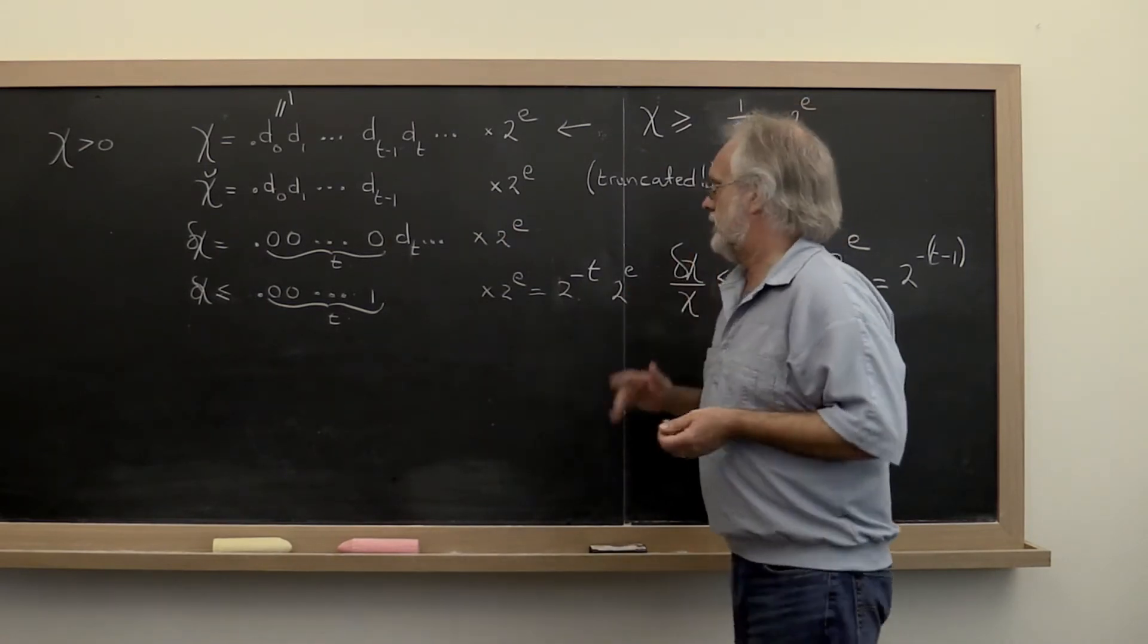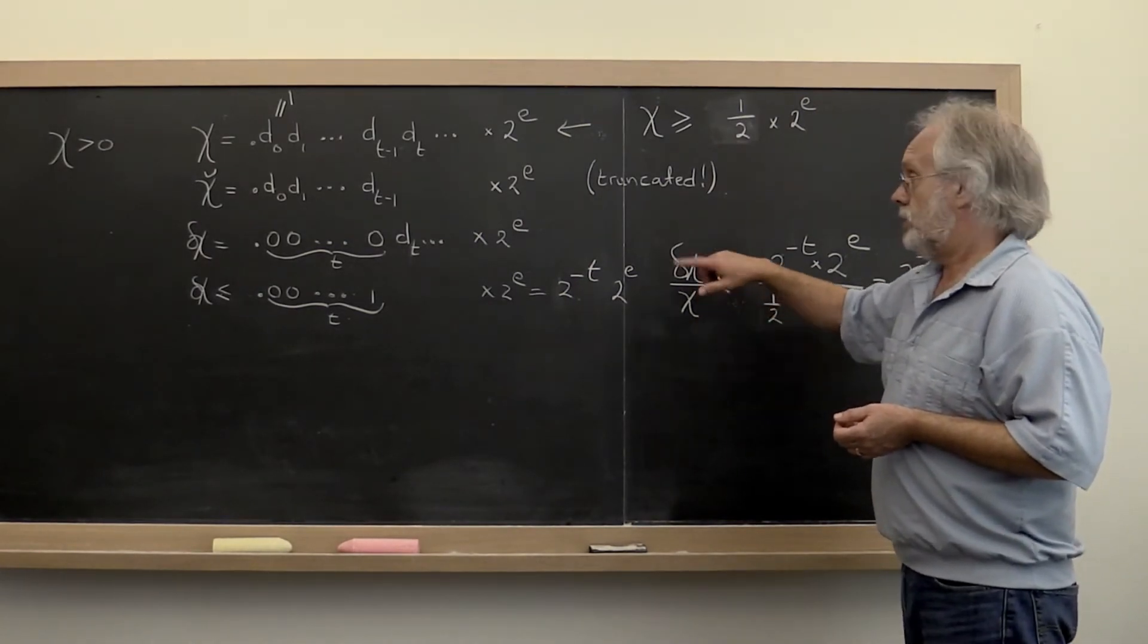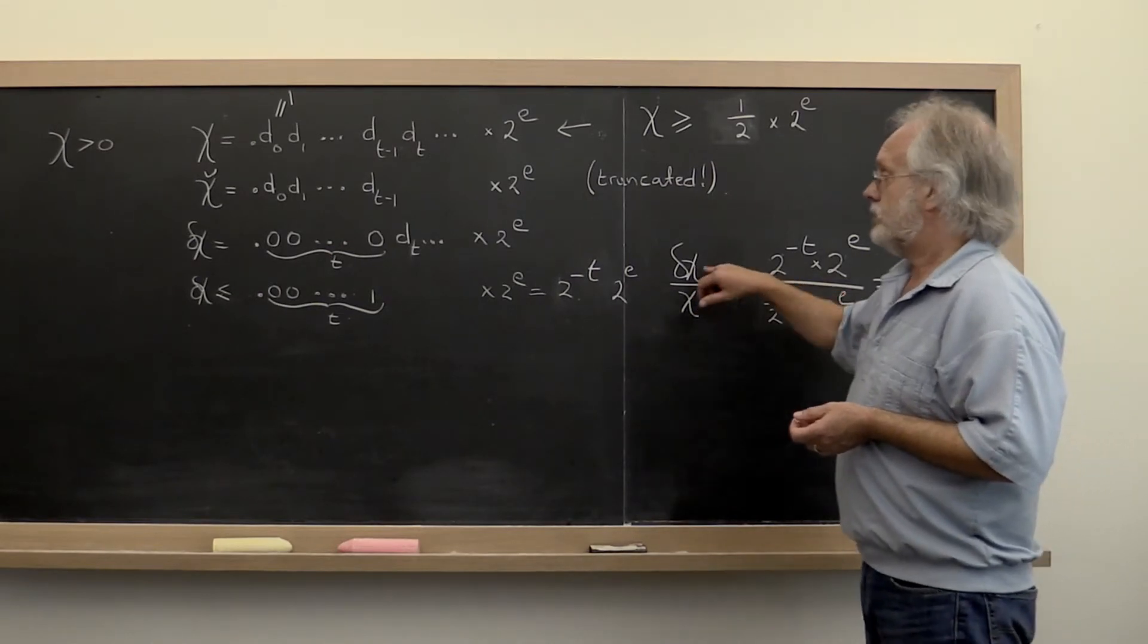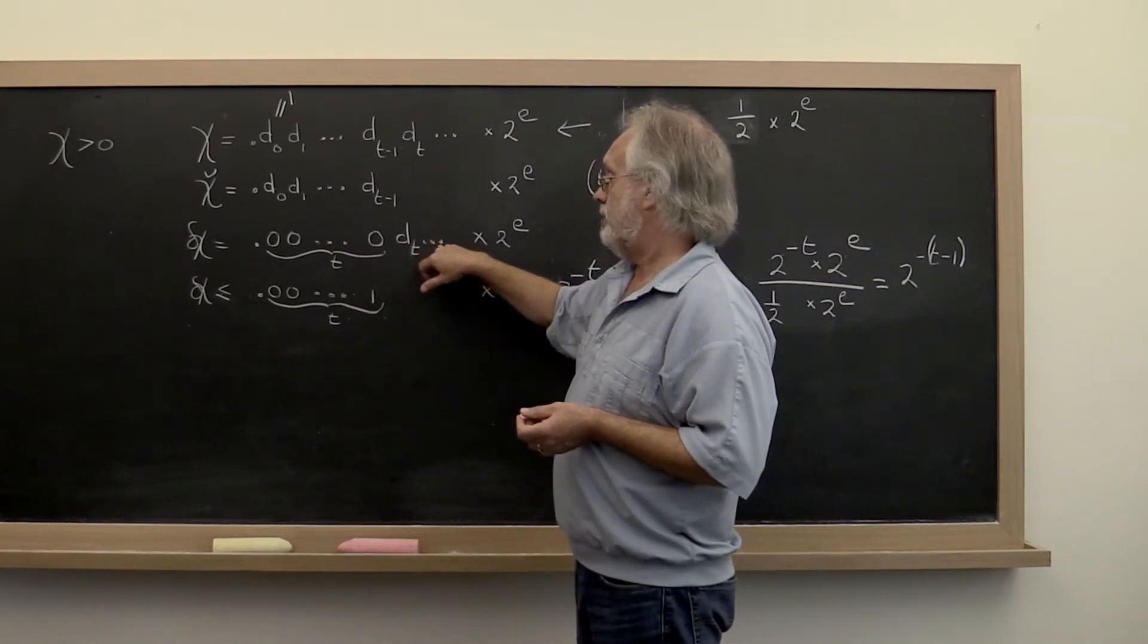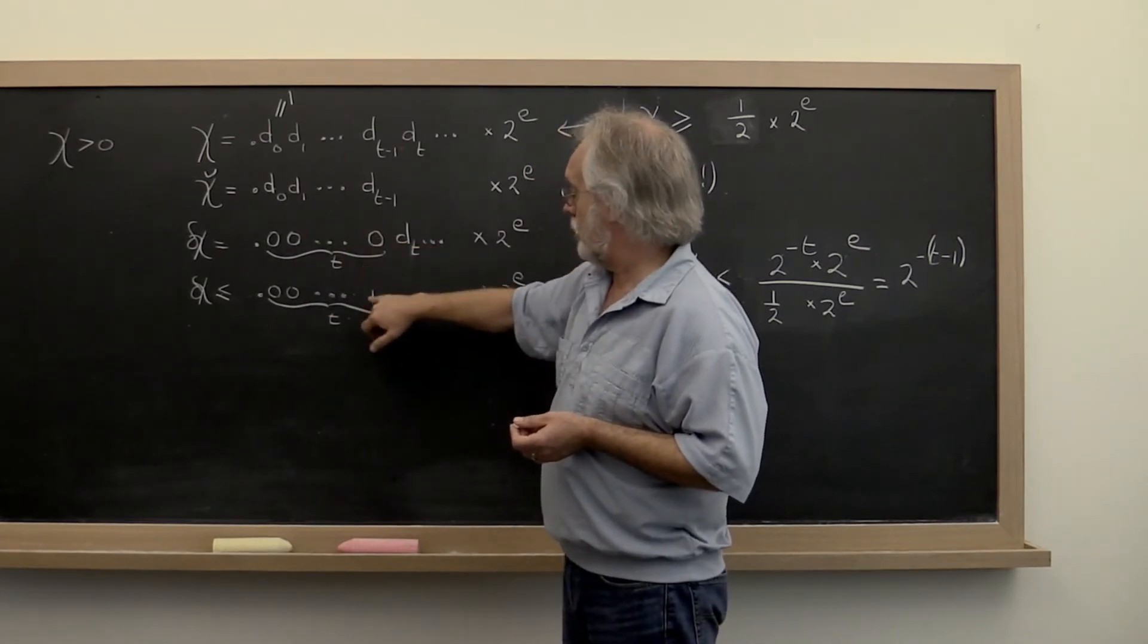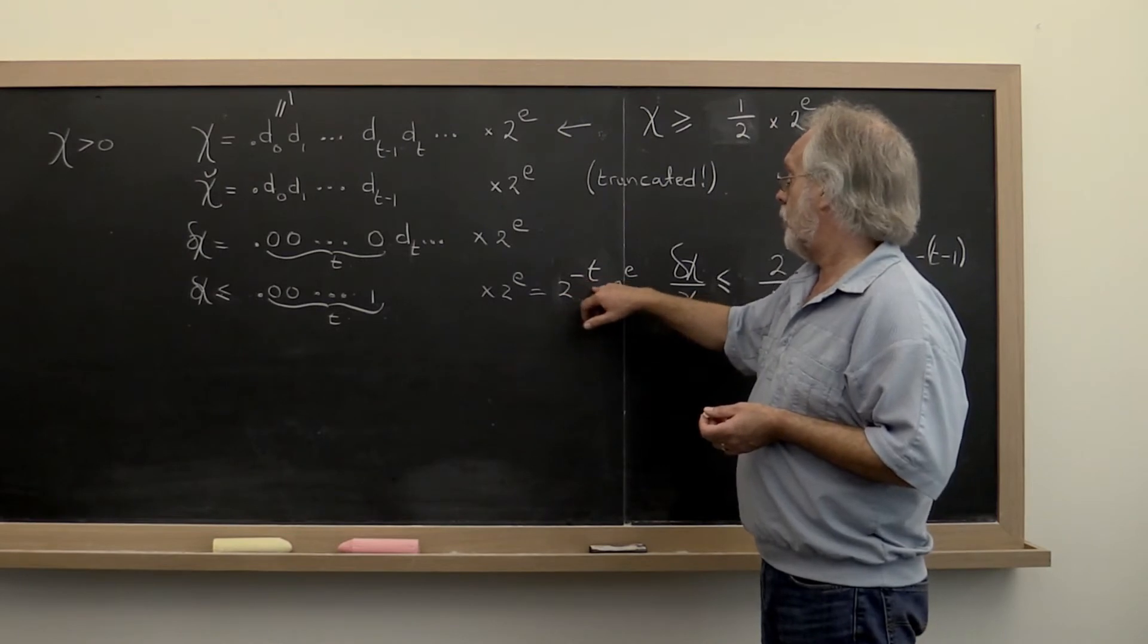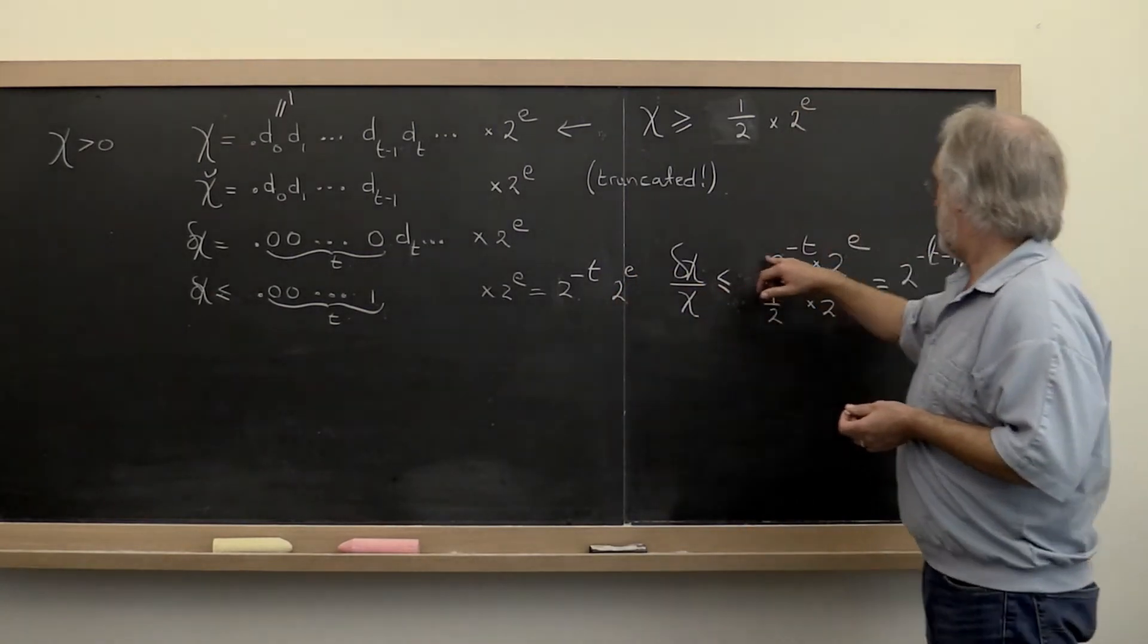Now what we are interested in is what the relative error is in the number that gets stored. So we're interested in delta chi divided by chi. Now delta chi we can bound by noticing that whatever number we have here is certainly less than or equal to this right here except with this last zero replaced by a 1. And if you work it out, that number is just 2 to the minus t power times 2 to the exponent that we started with. Right? So that we get right here.